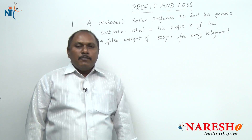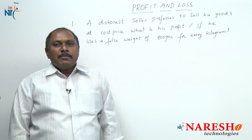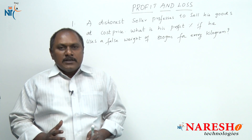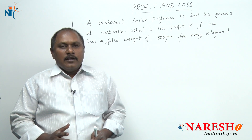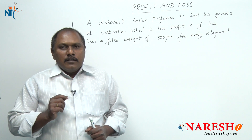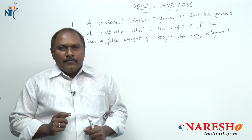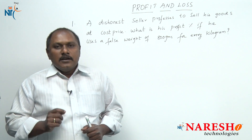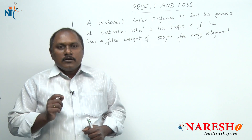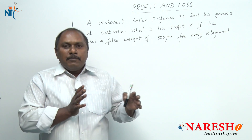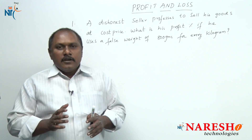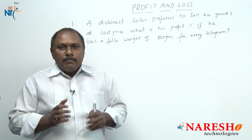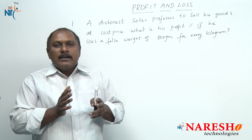Till now we have solved problems where cost price and selling price are involved. Generally, profit percentage or loss percentage is calculated in two different ways. The first way is in terms of money — profit percentage or loss percentage is always calculated on cost price. In all the previous videos related to profit and loss, we have been discussing these points.